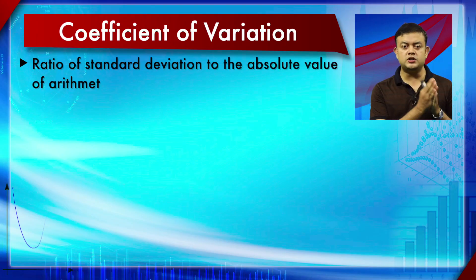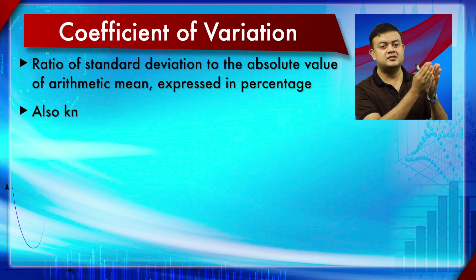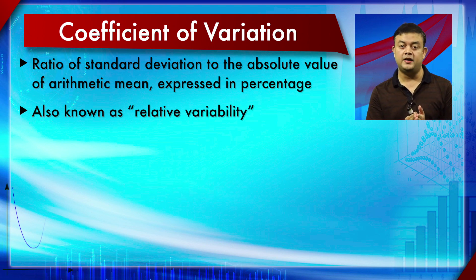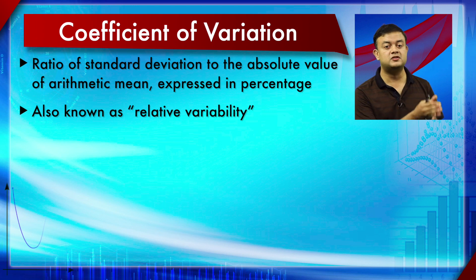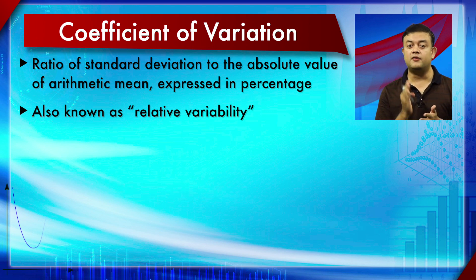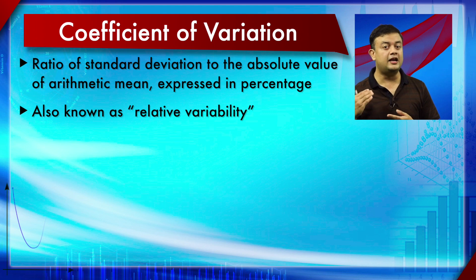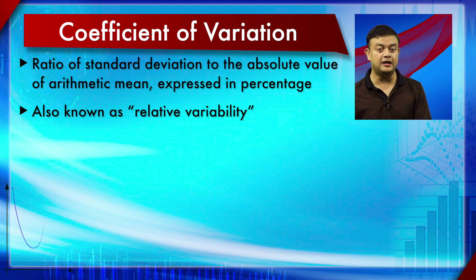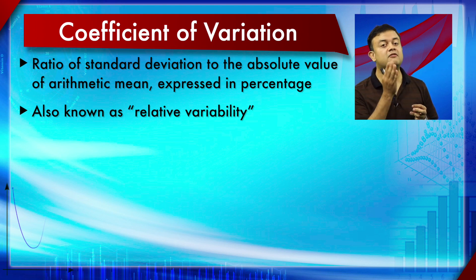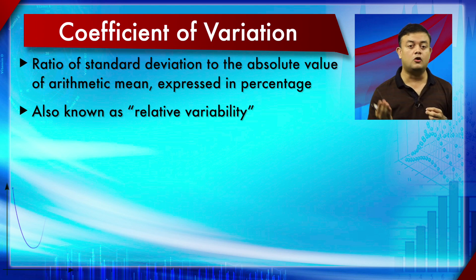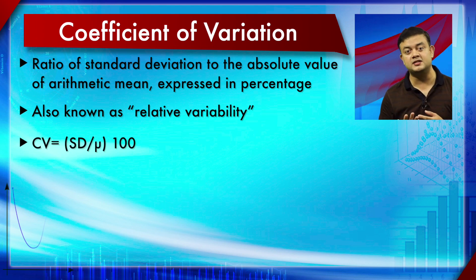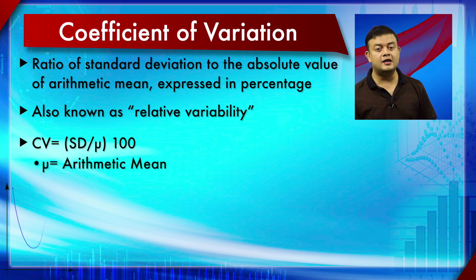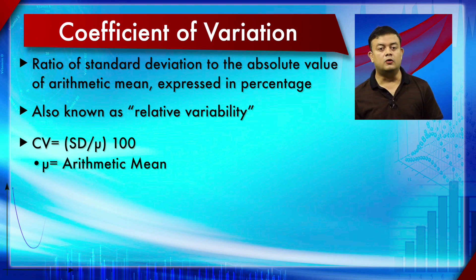Next is the Coefficient of Variation (CV). It is the ratio of the standard deviation to the absolute value of the arithmetic mean, expressed as a percentage. The mean can be negative, but we use the absolute value here, so the result is always positive. CV is also known as relative variability.